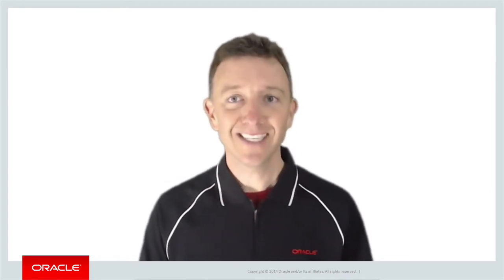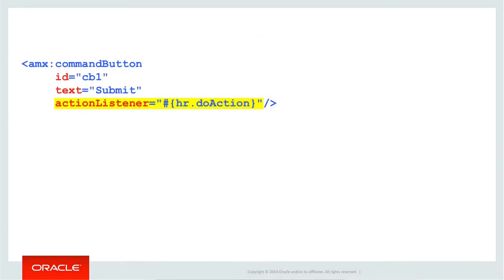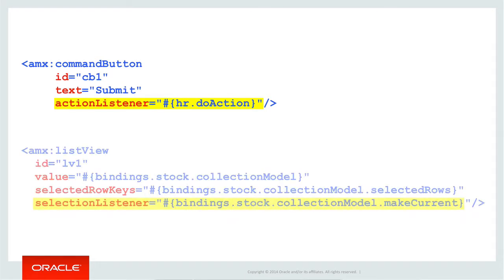You might have noticed over the various Oracle Mobile Application Framework training videos that we've already seen, there are these hints of something called listeners. For example, when we define an AMX command button, it includes a property ActionListener. Alternatively, a ListView component includes a SelectionListener property.